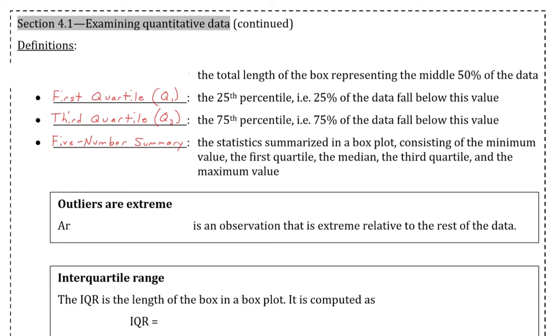If you take the difference of these aforementioned quartiles, you get the interquartile range, the total length of the box representing the middle 50% of the data. The box plot was also defined as plotting unusual observations, also known as outliers, observations that are extreme relative to the rest of the data.